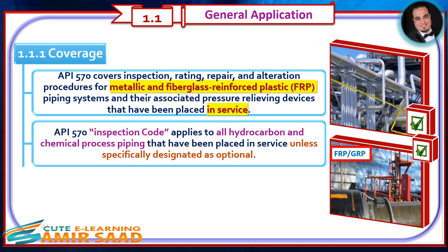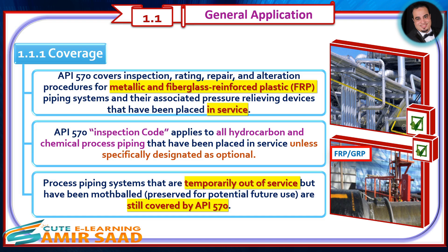API 570 Inspection Code applies to all hydrocarbon and chemical process piping that have been placed in service, unless specifically designated as optional. Process piping systems that are temporarily out of service but have been mothballed and preserved for potential future use are still covered by API 570.